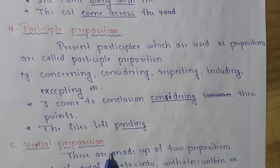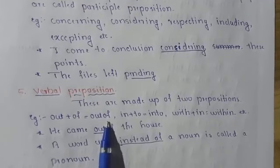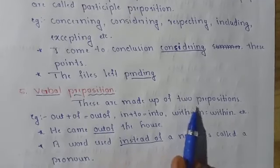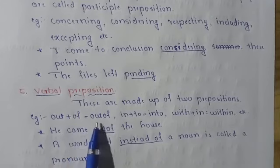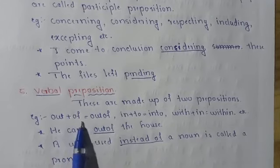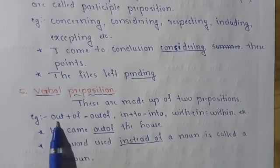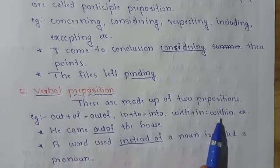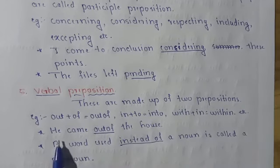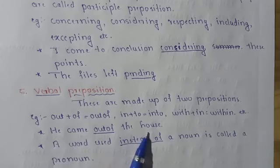The fifth one is verbal preposition. These are made up of two prepositions. For example: out plus of becomes out of. Other examples include into, within, etc. For example: He came out of the house.